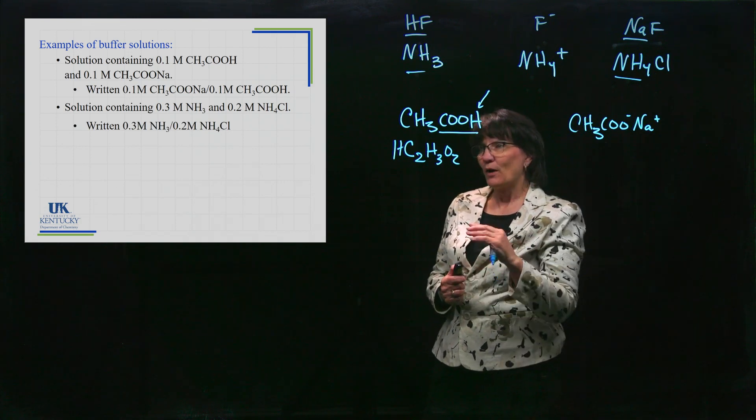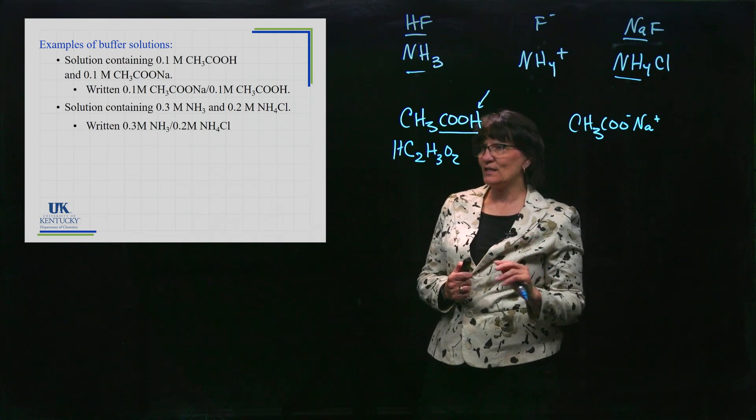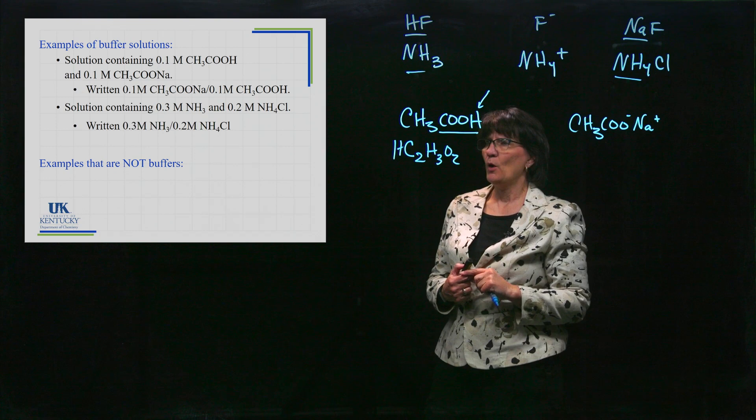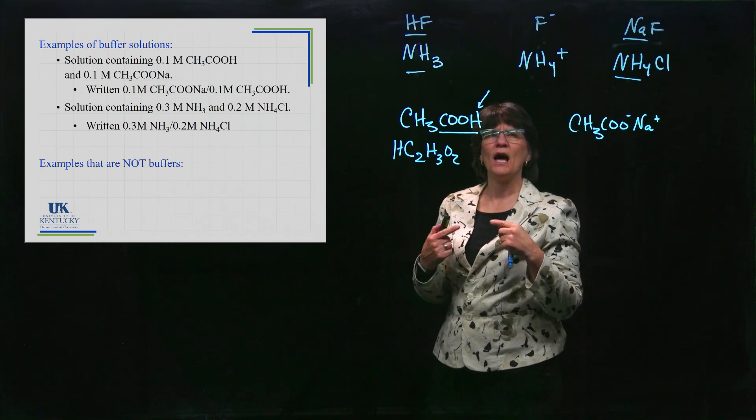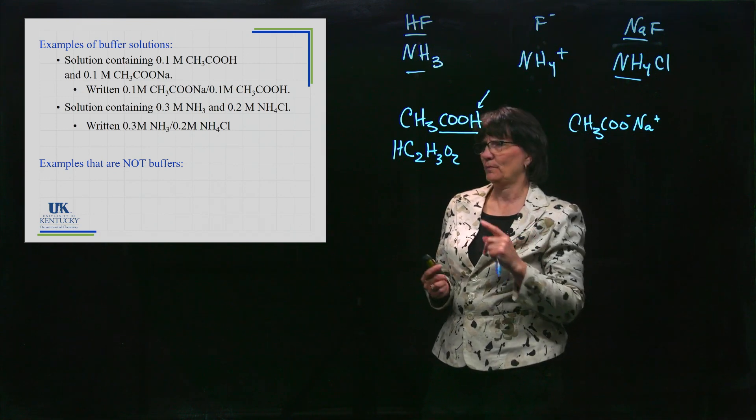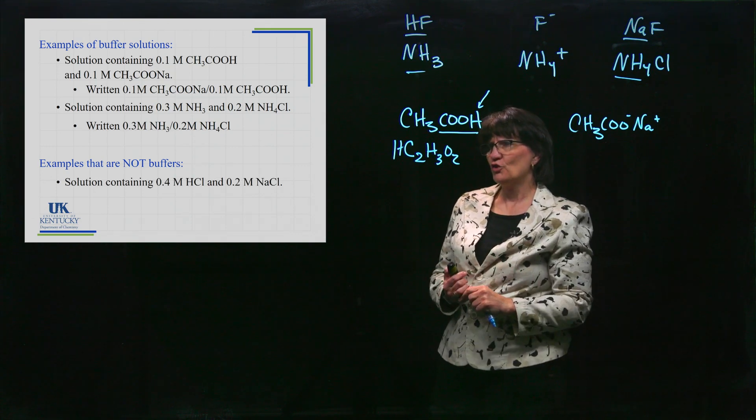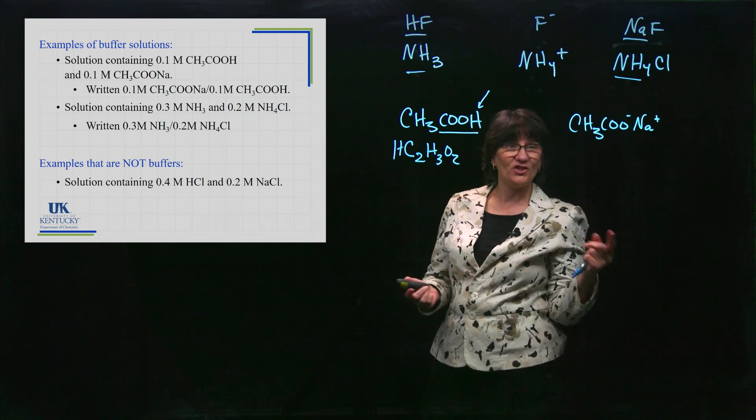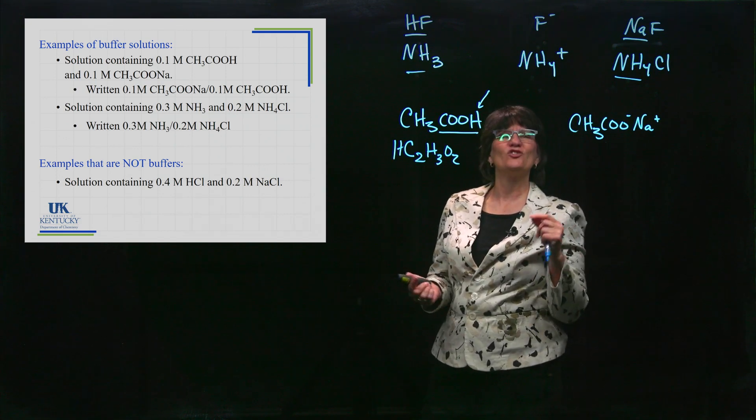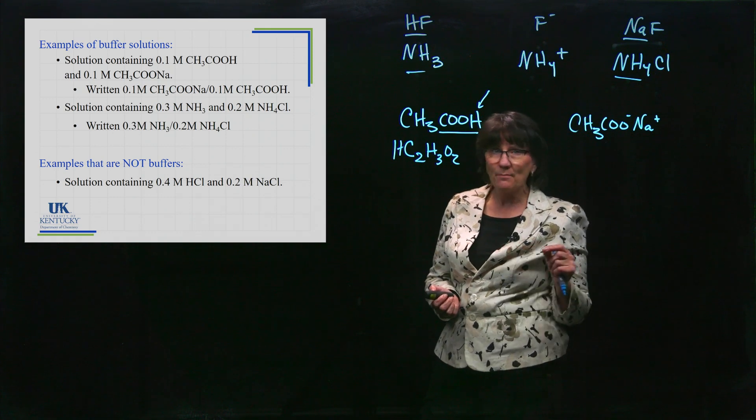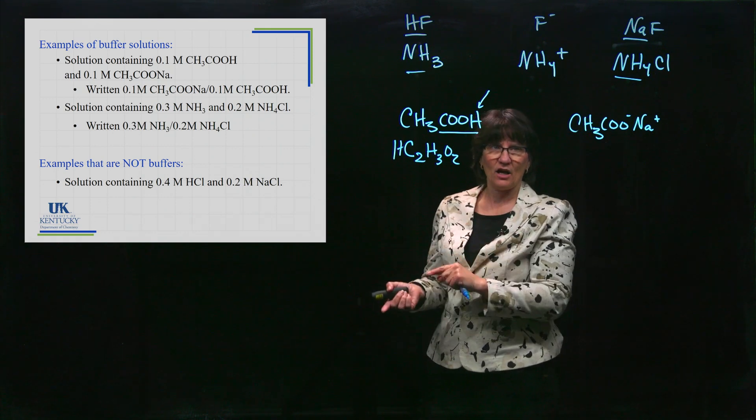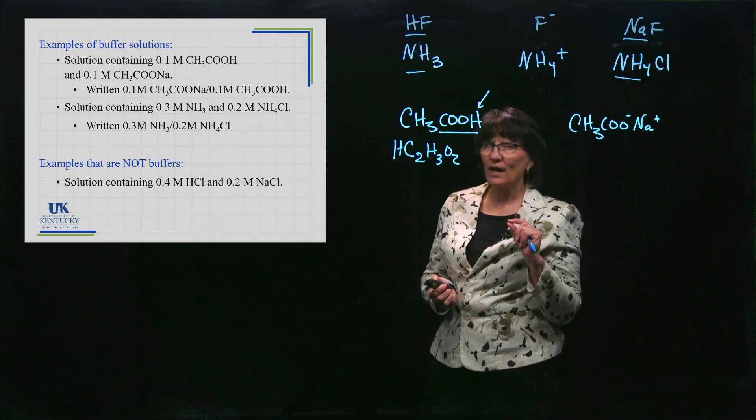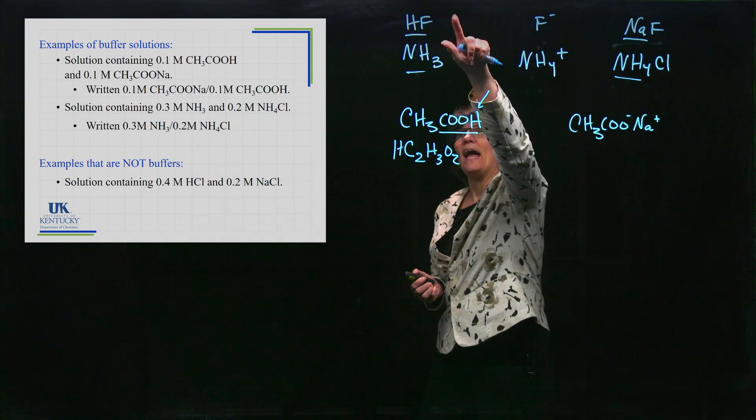Here's examples of what are not buffers. We have a very specific definition and I'm going to show you ones that are commonly confused. A solution containing HCl and sodium chloride - where does HCl fit on our acid-base world? It's a strong acid. You cannot make buffers if you have a strong acid and its conjugate base salt for reasons we'll see as we proceed, but you've got to make sure you tag in that they have to be weak to start with.